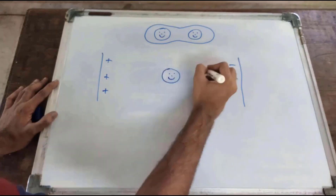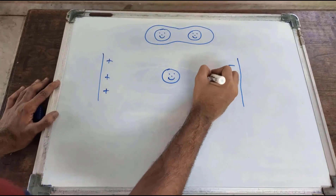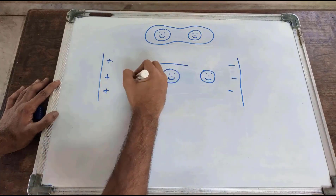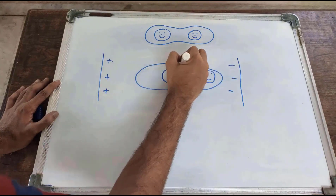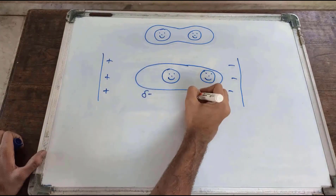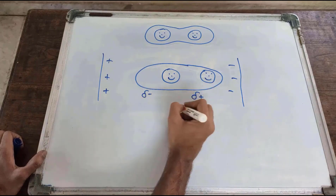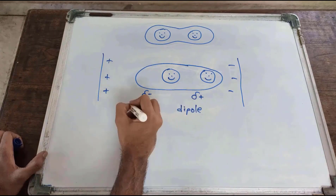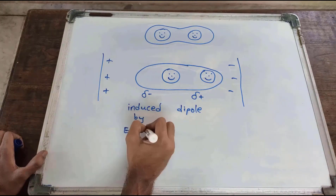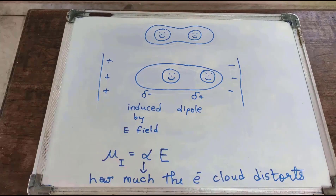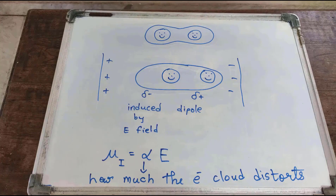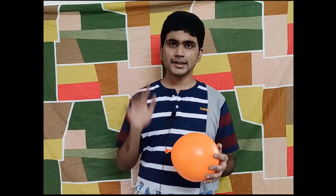When a molecule is placed in an electric field, the electron cloud gets closer towards the positive end. This induces a dipole, which is charges separated over a distance. It can be shown by this equation, where alpha tells you how easily the electron cloud can get distorted.